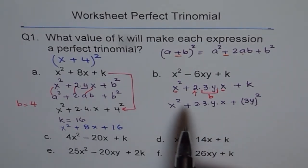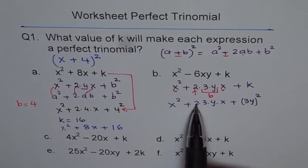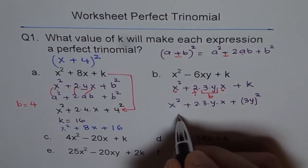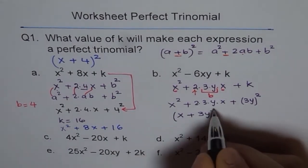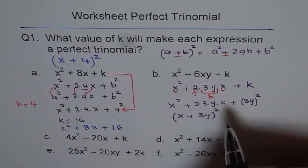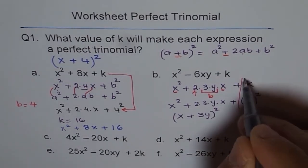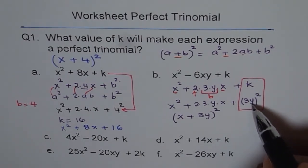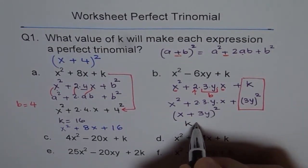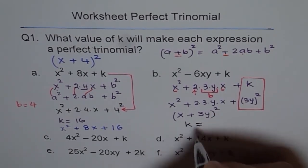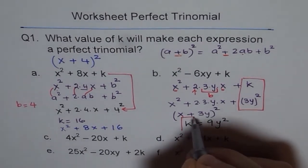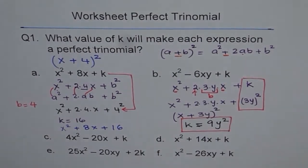Here a = x and b = 3y. So k should be (3y)² = 9y². Many students make mistakes at this stage — sometimes they forget the square, or just write 3y. The correct answer is k = 9y². Factoring gives (x + 3y)².